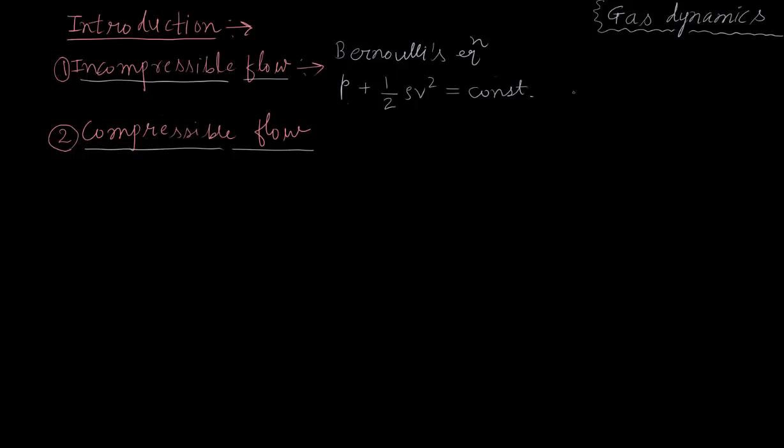In deriving this particular equation, we assume that the fluid is incompressible, and by incompressible we mean that density of the fluid is constant throughout the flow. In general, the fluid is incompressible if the Mach number M is less than 0.3. This was incompressible flow.